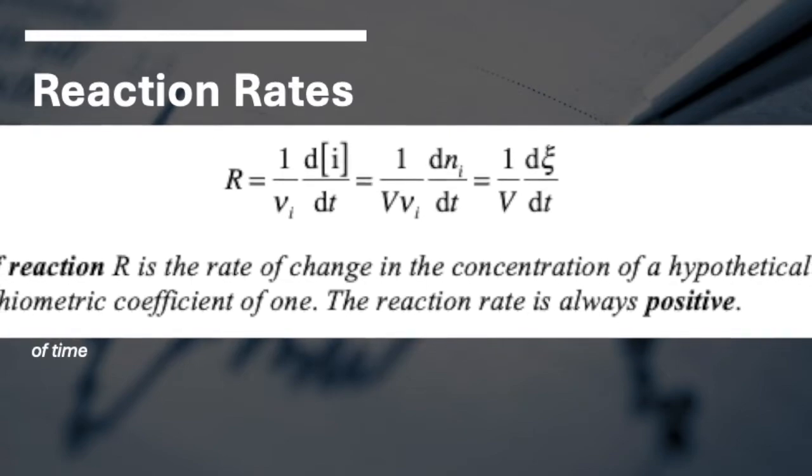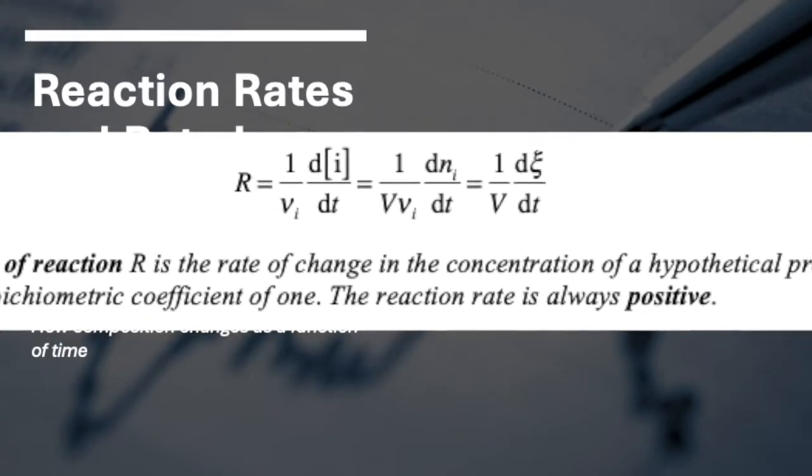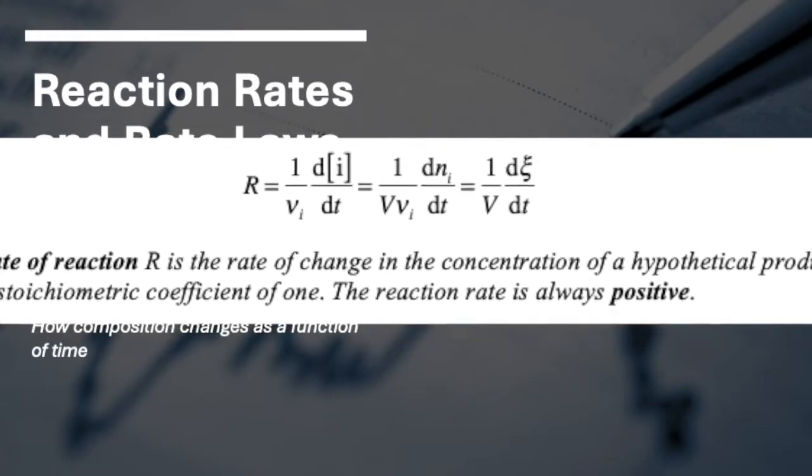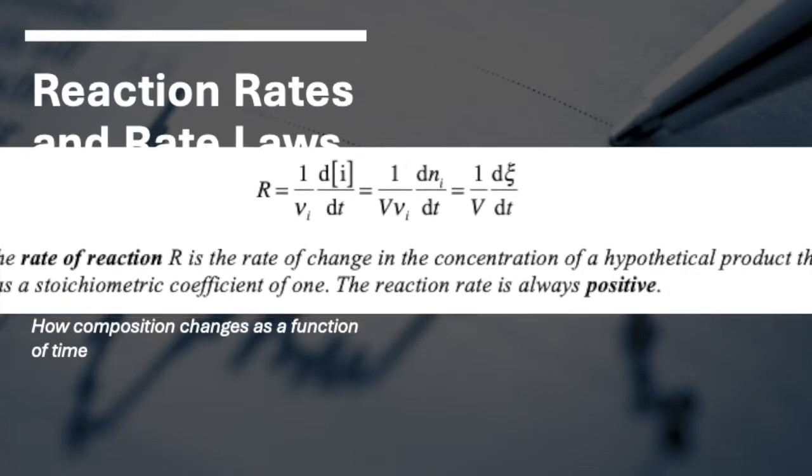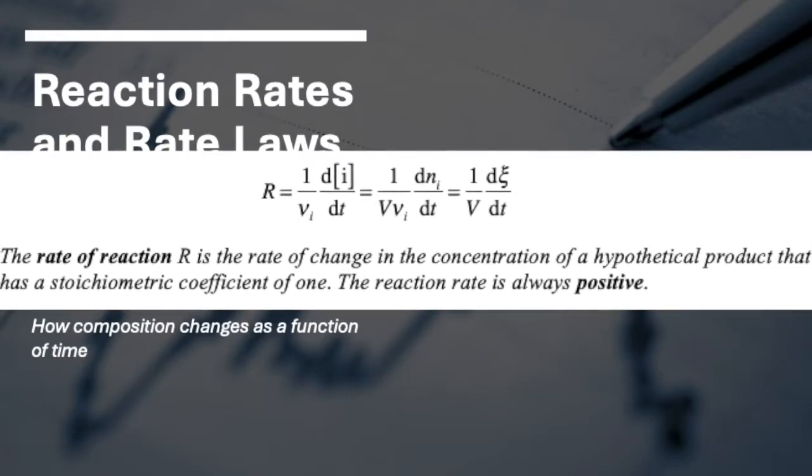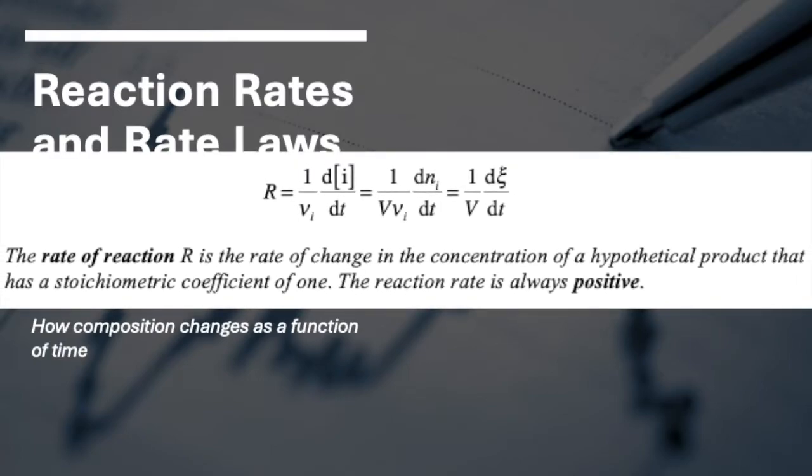The rate of reaction, R, is the rate of change in the concentration of a hypothetical product that has a stoichiometric coefficient of 1. The reaction rate is always positive.